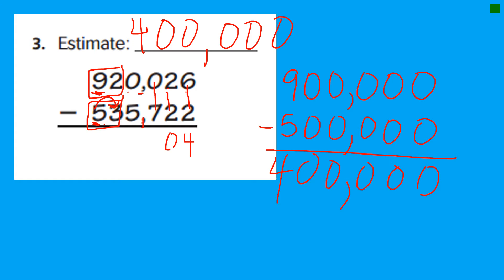0 minus 7. Can't do that because it's 0 minus 7. So we have to regroup on this one. All right, let's go over here and we can't regroup from a 0. So what do we do?